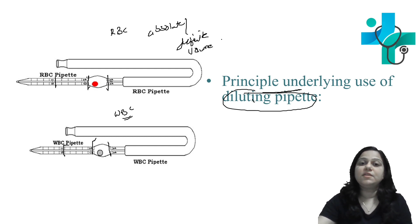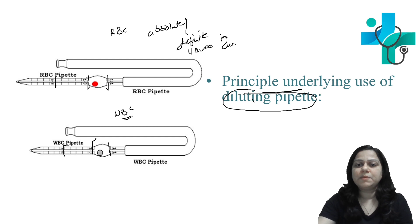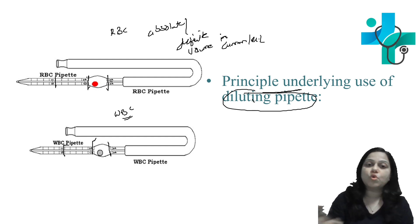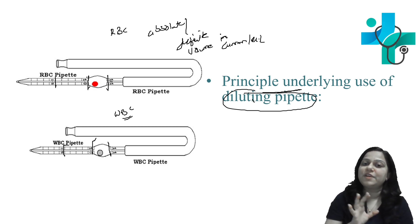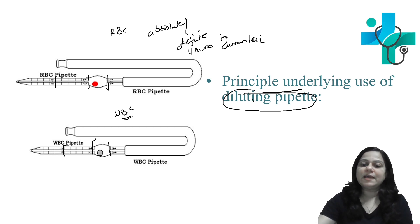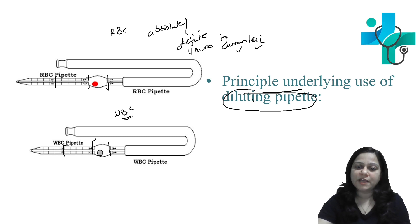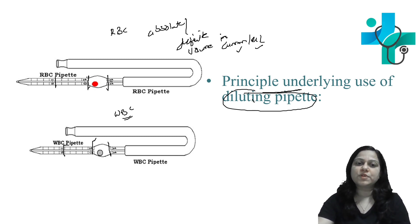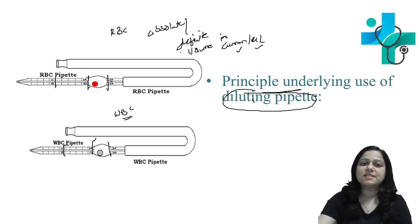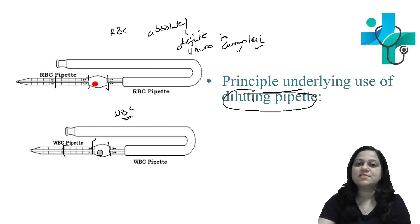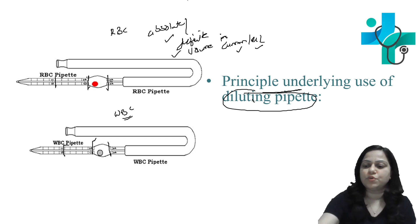These numbers do not indicate any absolute or definitive volume in cubic mm or microliter. This is a very common mistake made by students — these are just numbers and do not indicate any absolute or definite volume.